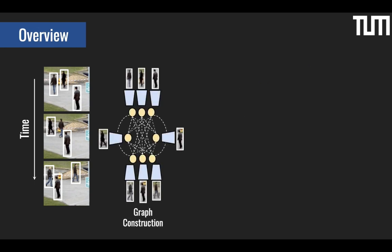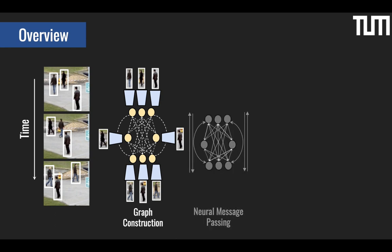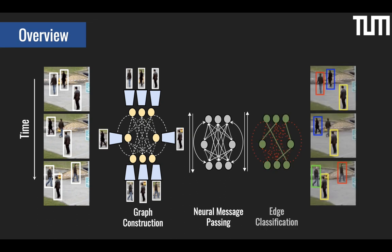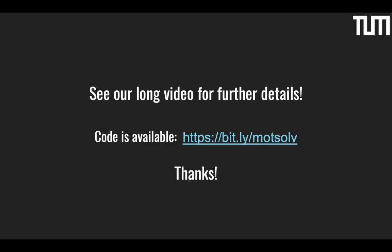More specifically, we build a graph in which spatiotemporal and appearance cues are encoded as node and edge embeddings. We then use a message-passing network to propagate these embeddings across the graph. Finally, we classify edge embeddings into active and non-active to obtain final trajectories. Thank you for your attention and please see our longer video for further details.